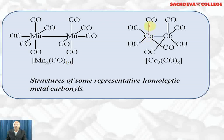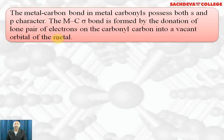In dicobalt octacarbonyl, each cobalt atom is linked tetrahedrally with four carbon monoxide molecules. Co₂(CO)₈ is used as a catalyst in the oxo process. The metal–carbon bond in metal carbonyls possesses both sigma and pi character — that is, both a sigma bond and a pi bond are present.